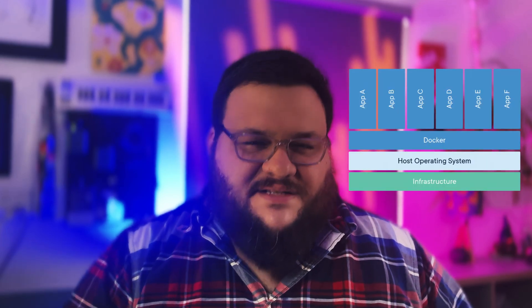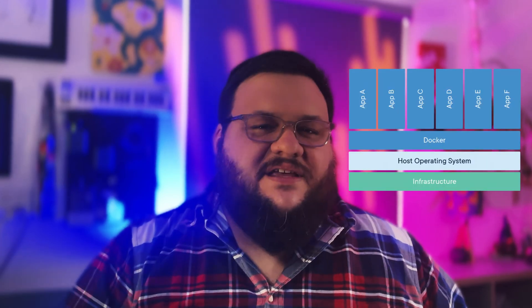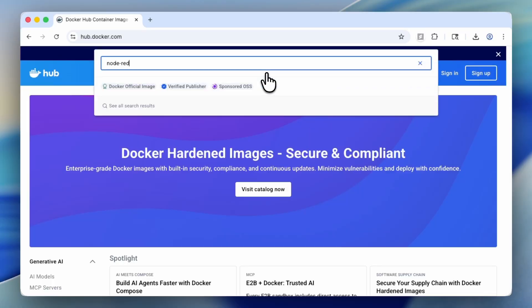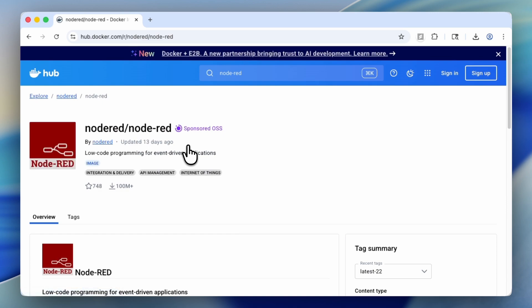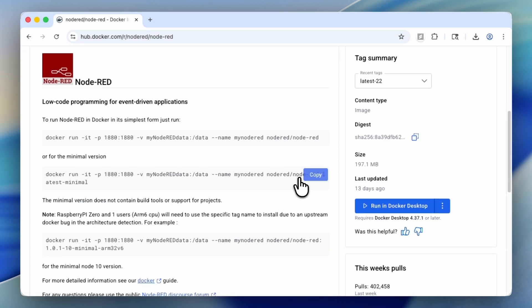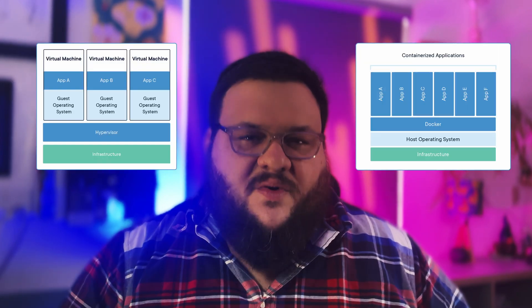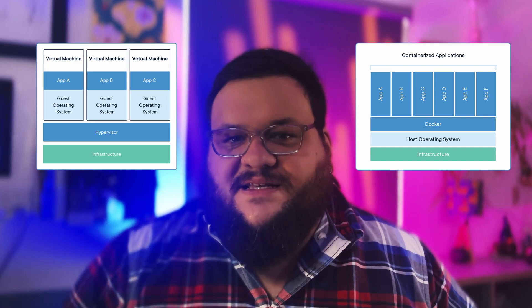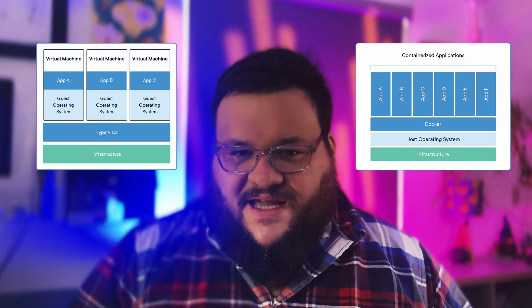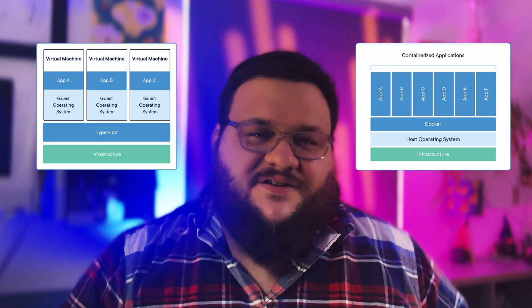Docker is a platform that packages your application and all of its dependencies into something called a container. Think of a container as an isolated computer that doesn't have a physical form — it has all the libraries, the software, the dependencies, everything you need to get going. You can share that container and be pretty sure that, as long as the architecture is compatible, your application will run just like it did on the system where it was developed. That might sound a lot like a virtual machine, but the difference is that virtual machines use their own operating systems, whereas Docker uses the kernel of the host system — so it's fast, reliable, and the containers are super lightweight.